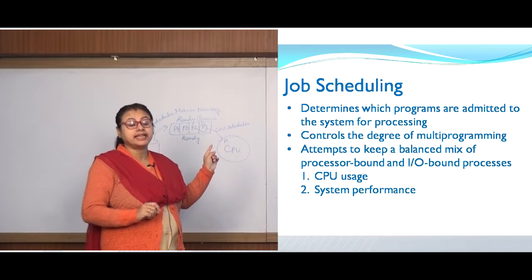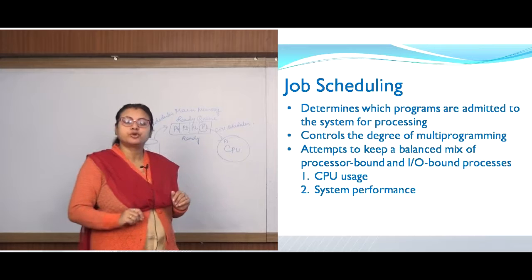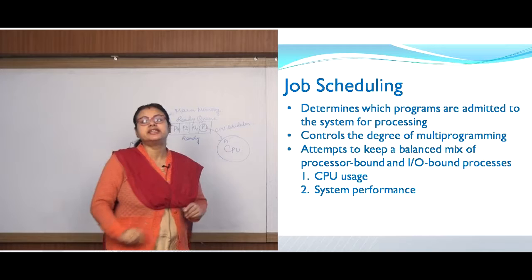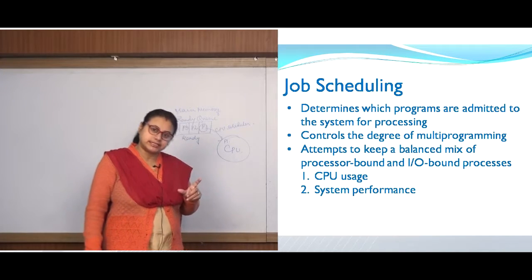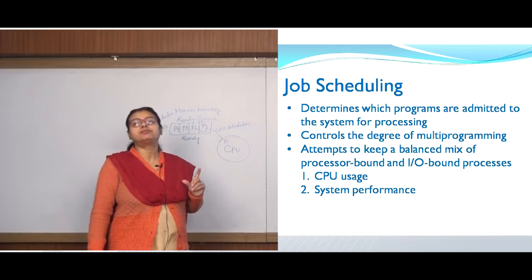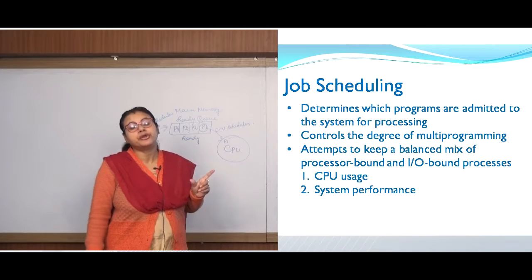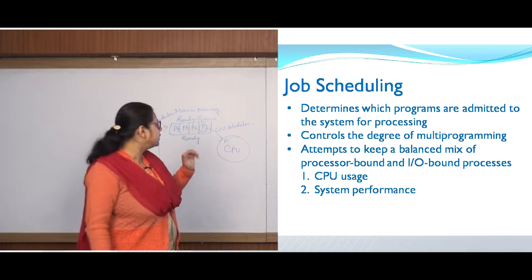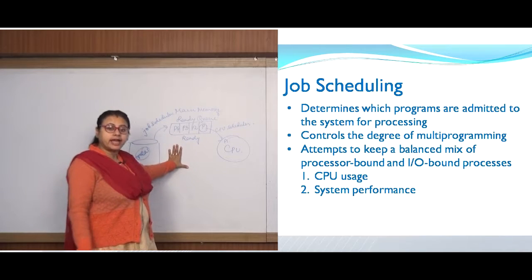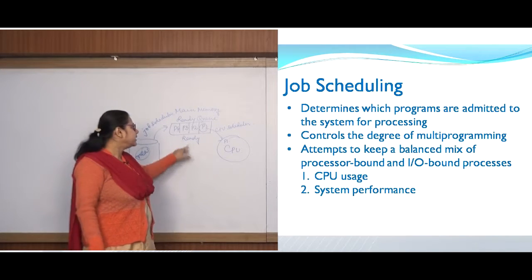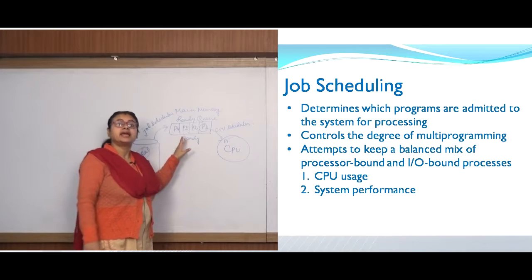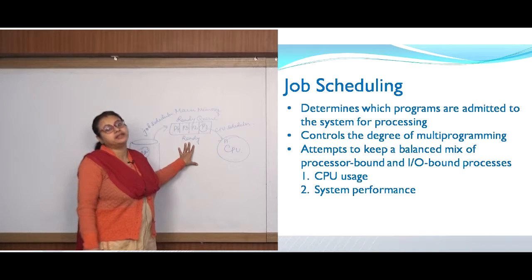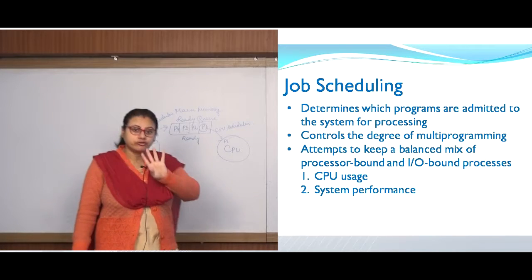It controls the degree of multiprogramming — at a particular instant of time, how many processes will be there in your ready queue is determined by the job scheduler. At a particular instant of time there are 1, 2, 3, and 4 processes. That means 4 processes are in the ready queue and the degree of multiprogramming is 4.